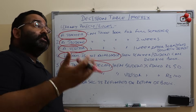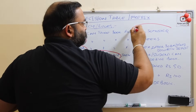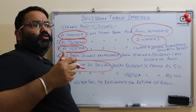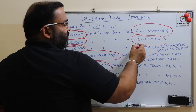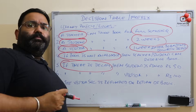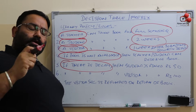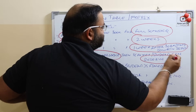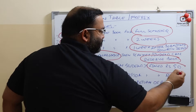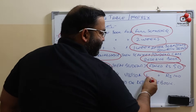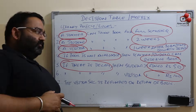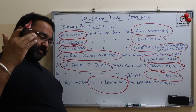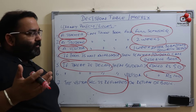Now identify the actions. 'Take book for full semester' — this is an action. 'Take book for two weeks' — again it is a verb, it is an action. 'Take book for one week and submit security deposit' — you are doing something, so these are actions. 'Reserve book' — again an action. 'Pay fine' — that is an action. 'Deposit security' — that is an action. 'Refund the security' — that is also an action.